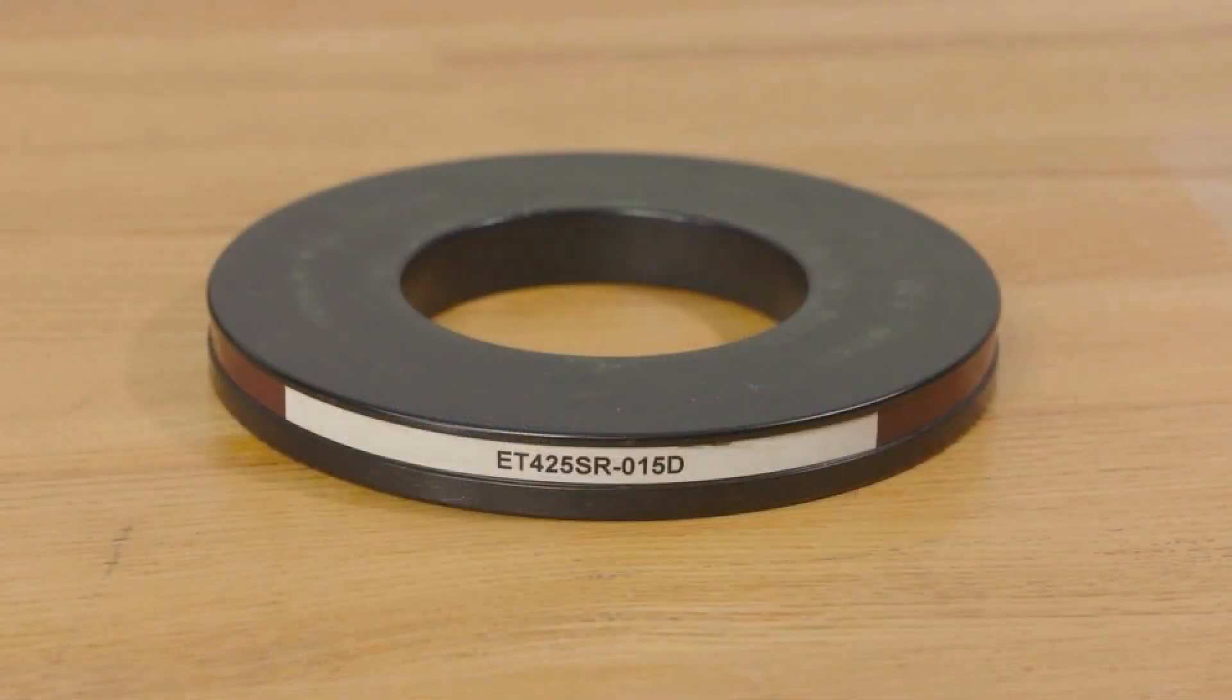You will also need a cupped 5 inch spacer ring placed flat side down. Today we will be using the ET425SRO15D spacer ring.